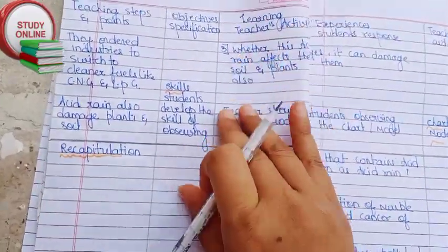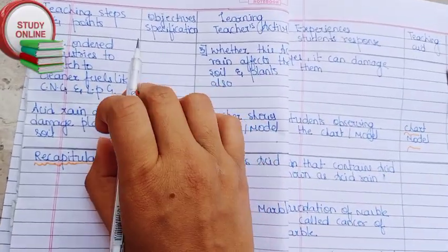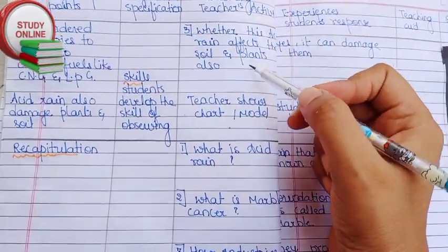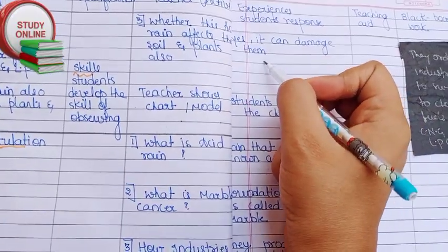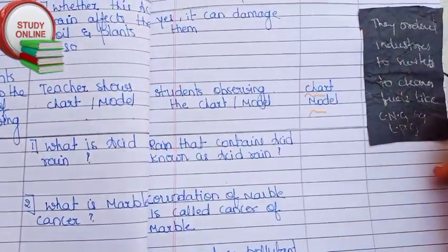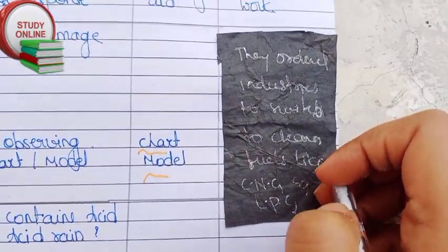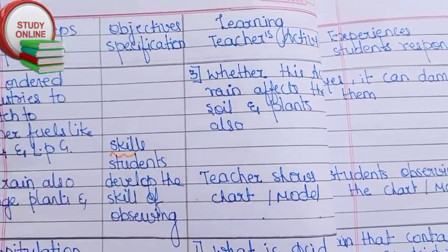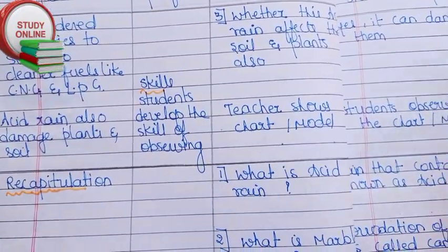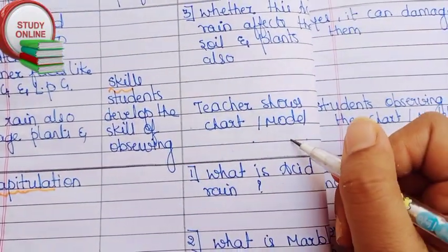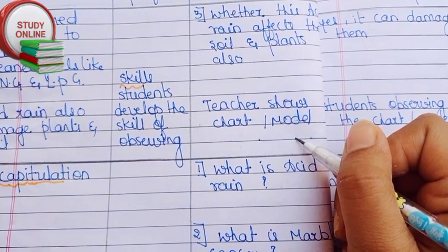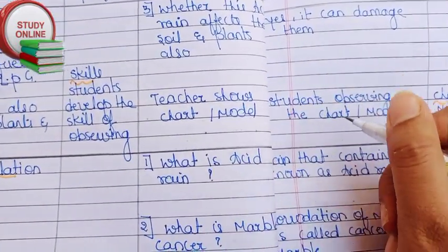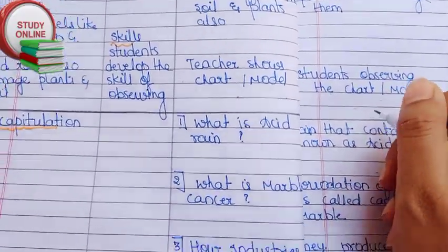Here you can see the rest of Presentation 2, with question three and its answer. Here is the blackboard work. After explaining properly, we again have to explain with the help of any teaching aid like a chart or model, and students observe the chart.